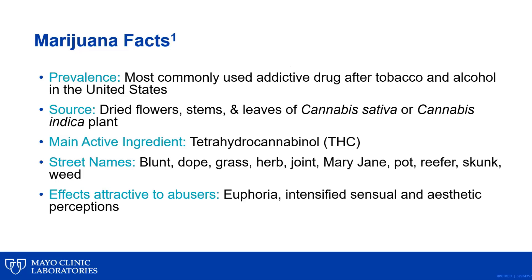Marijuana is the most commonly used addictive drug after tobacco and alcohol in the United States. Marijuana refers to the dried leaves, flowers, stems, and seeds from the cannabis sativa or cannabis indica plant. The plant contains the mind-altering chemical tetrahydrocannabinol, or THC, and other compounds. It is commonly known on the street as blunt, dope, grass, pot, and weed.